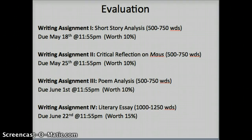Writing assignment number two is going to be on the graphic novel Maus — also worth 10%. Writing assignment number three will be a poetry analysis, and I'll give more explicit instructions on how to do that later on — also worth 10%. And then your last essay is going to be on either the novel The Wars or Shawshank Redemption. That will be a little more writing, so 1,000 words and worth 15%.